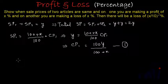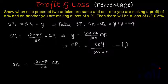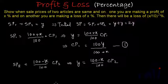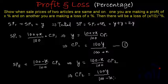In the second case, where a loss of x percent is made, SP2 = (100 − x)/100 × CP2. Since both sale prices are equal to y, we have y = (100 − x)/100 × CP2, which gives us CP2 = 100y/(100 − x). Let's call this equation number 2.